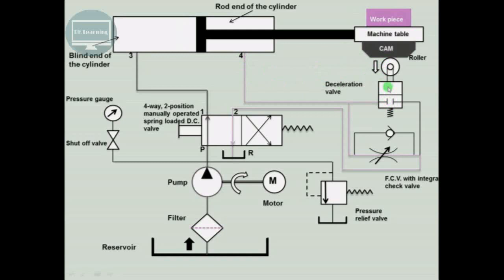As the roller is pressed, the deceleration valve moves to the blocked position, so ports are blocked and the fluid from port 4 can no longer pass through the deceleration valve. The fluid comes to this end and cannot pass through the check valve because it is in the normally closed position. Therefore the fluid is compelled to go through the flow control valve with its restricted opening, as indicated by the arrow. The fluid then goes to the reservoir from port 2 to R in a reduced quantity, controlling the forward motion of the piston and allowing work to be performed at reduced speed.